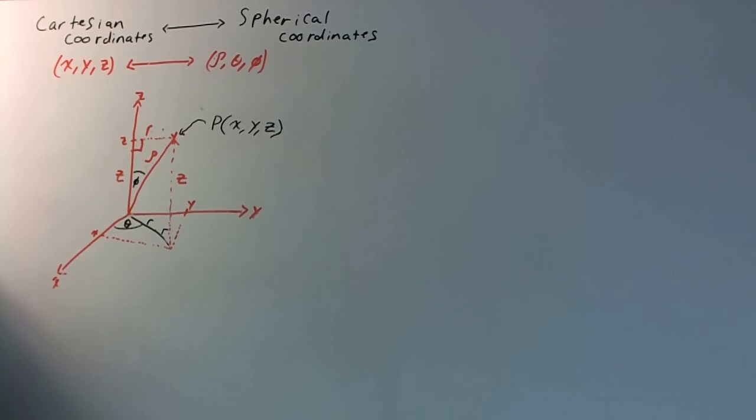So what spherical coordinates are, are basically a great way to represent a coordinate in three dimensions. Instead of using x, y, and z, a lot of times it's more convenient to use rho (or r in some cases, depending on where you look), theta and phi.